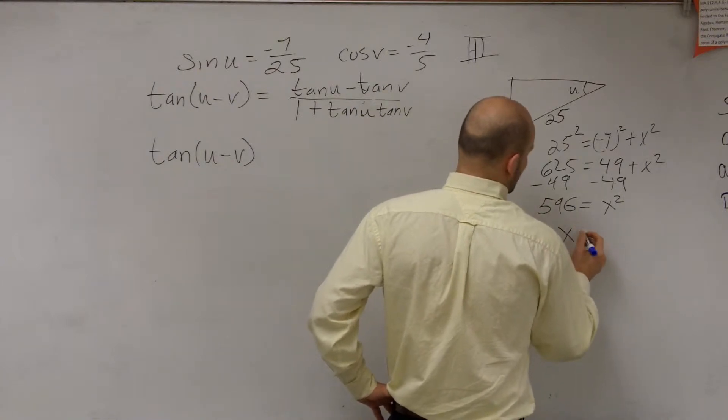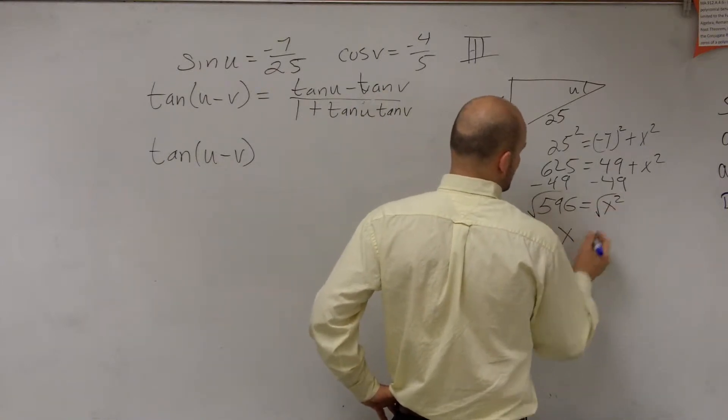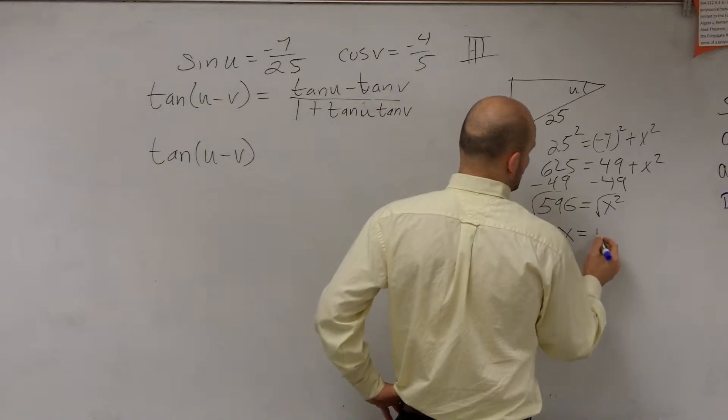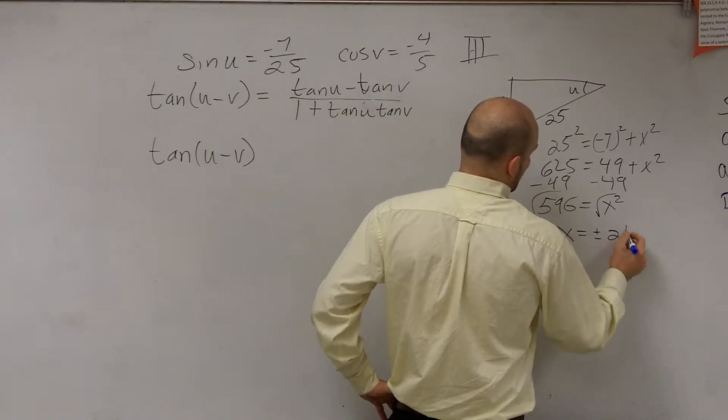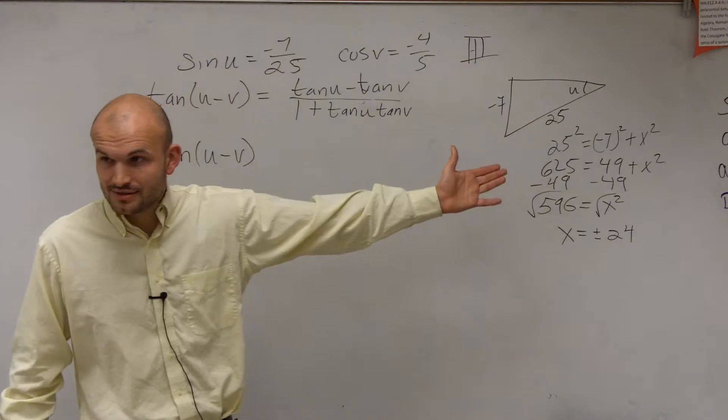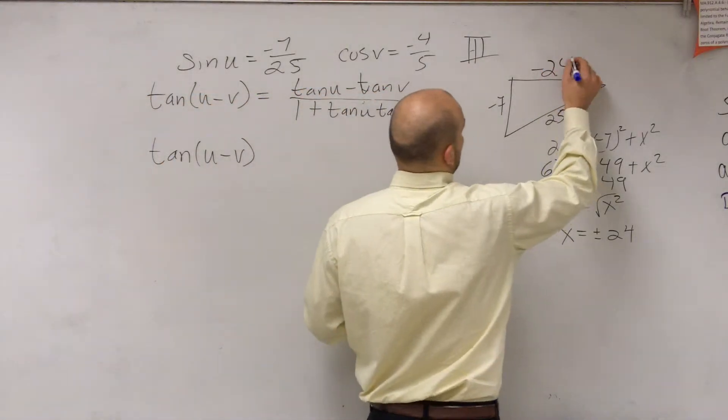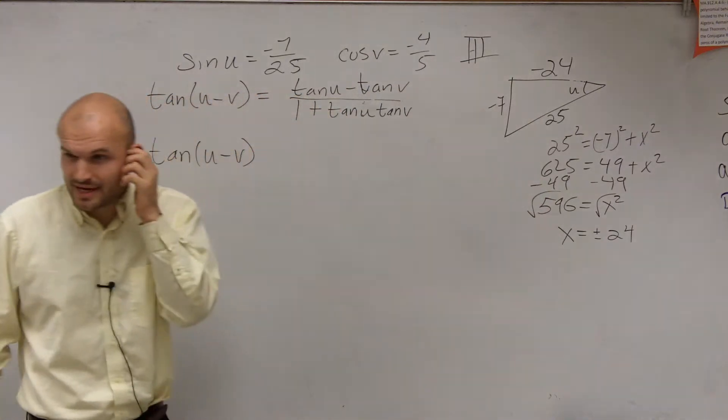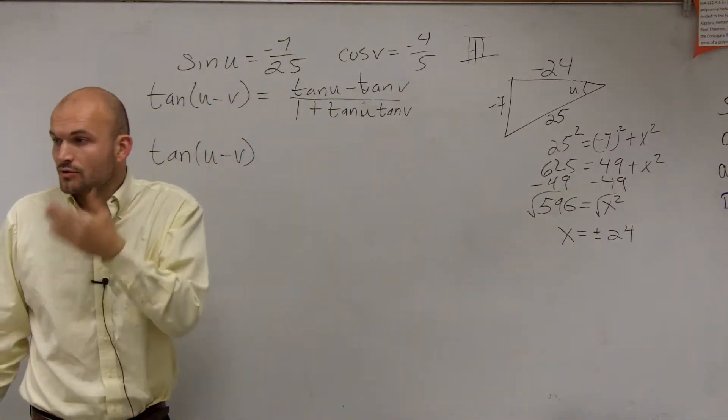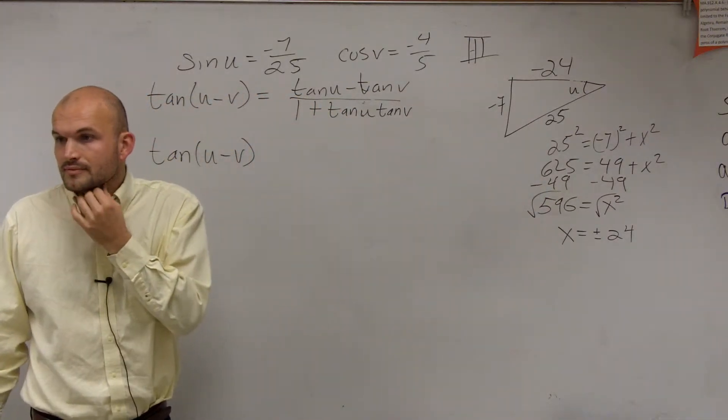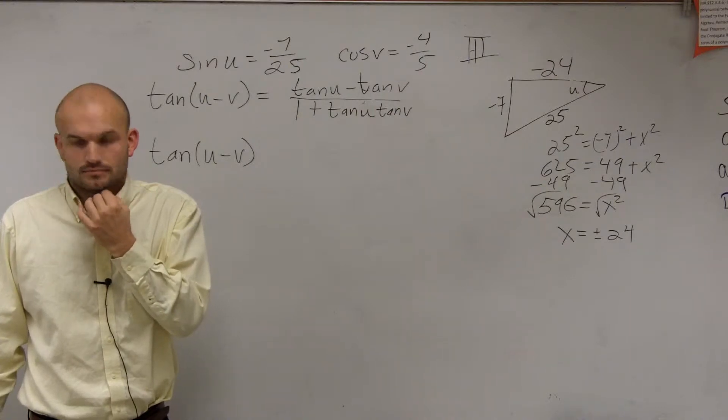Well, yes, so we're going to have, remember when you take the square root, you get x equals plus or minus 24. But since we know that it's in the third quadrant, we know that it has to be negative. Does that make sense? Why we make it negative? Because they tell us it's in the third quadrant. So we're going to say it's in the third quadrant.